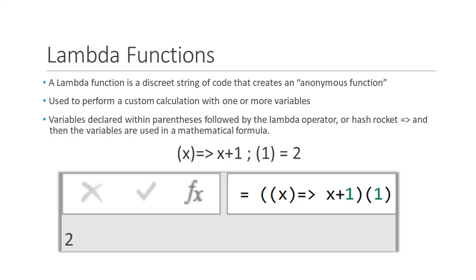To define a lambda function, we put one or more variables within parentheses, followed by the lambda operator, or hashrocket, and then use those variables in a mathematical formula. To create the lambda operator, we use both the equal symbol and the greater than symbol. In M language, to evaluate the lambda function, we put parentheses around the entire function expression and then another set of parentheses to define the values for the variables.